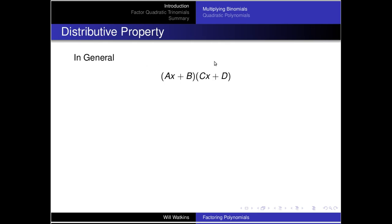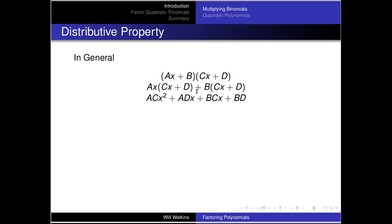I'm going to think of (cx + d) as one term and distribute that multiplication over the addition of (ax + b). Once that's done, I'm going to distribute the ax over (cx + d) and b over (cx + d). Those middle terms are like terms and so we can add them together.